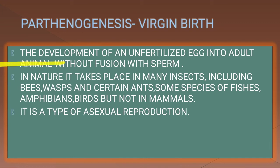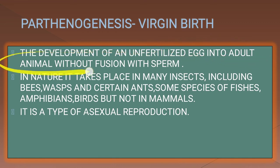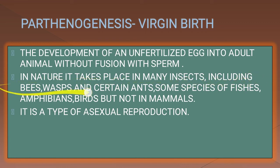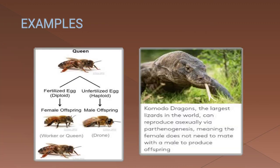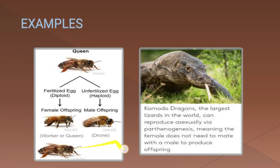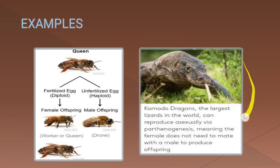Next is parthenogenesis, i.e. virgin birth — the development of an unfertilized egg into an adult animal without fusion with sperm. In nature, it takes place in many insects including bees, wasps, and certain ants, as well as some species of fish, amphibians, and birds, but not in mammals. This is a type of asexual reproduction. If females have fertilized eggs, they produce female offspring; unfertilized haploid eggs give rise to male offspring. Komodo dragons, the largest lizard in the world, can reproduce asexually through parthenogenesis.